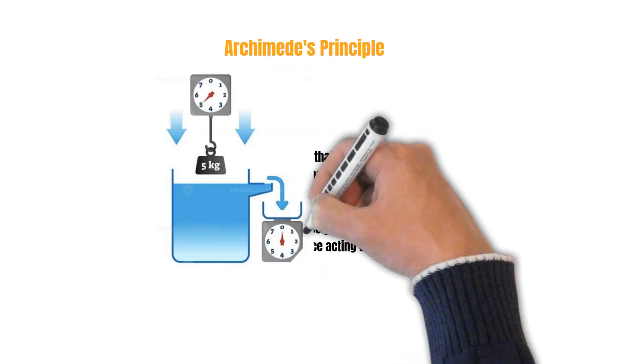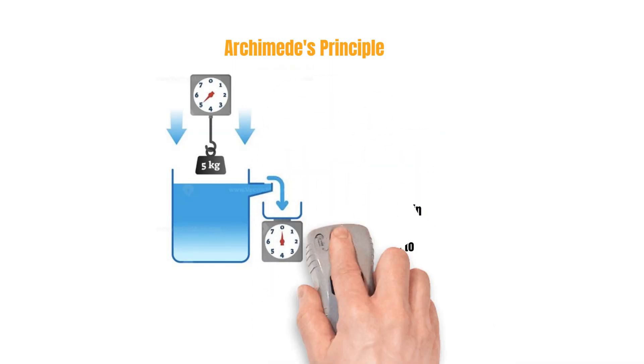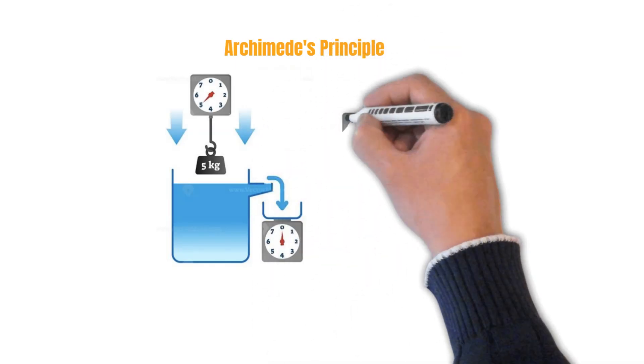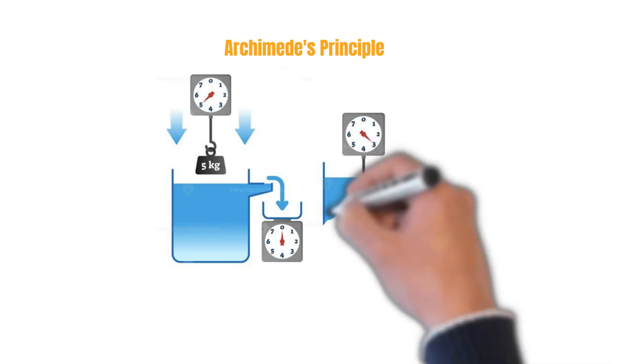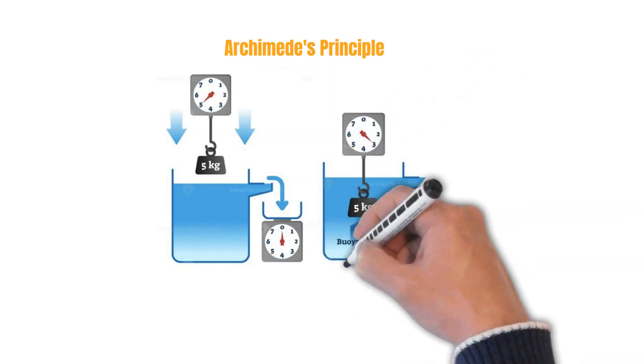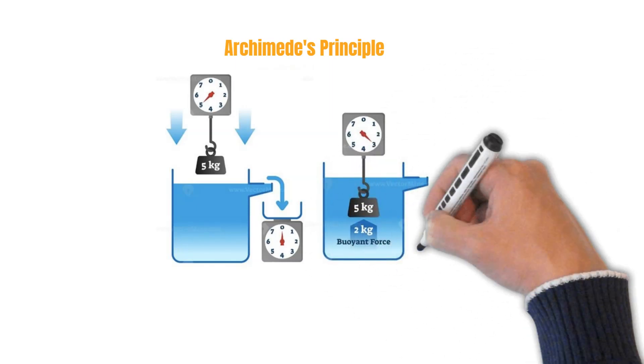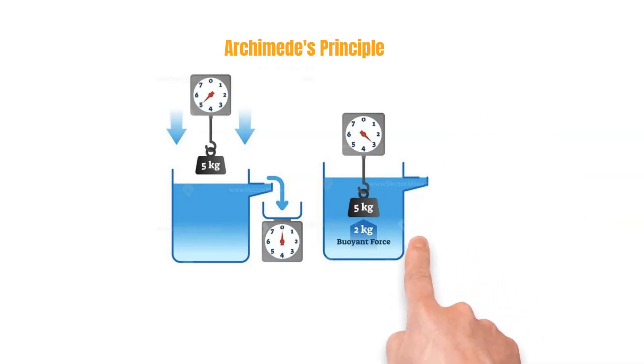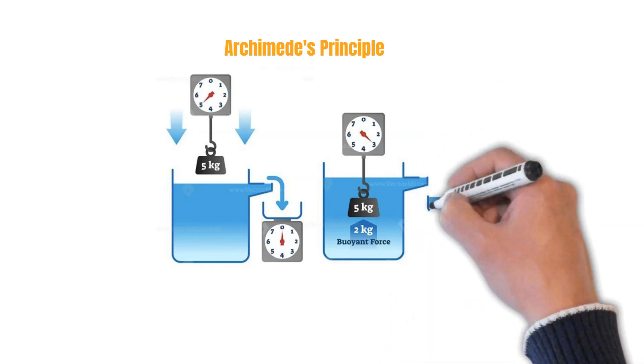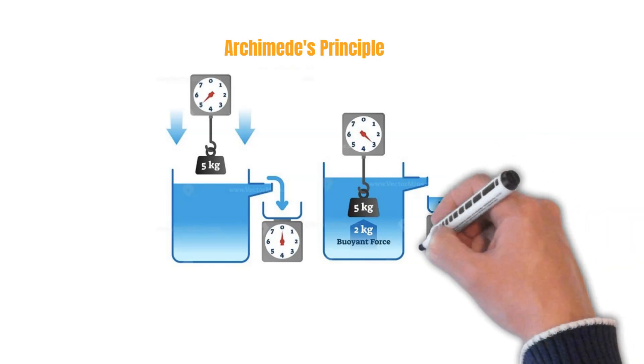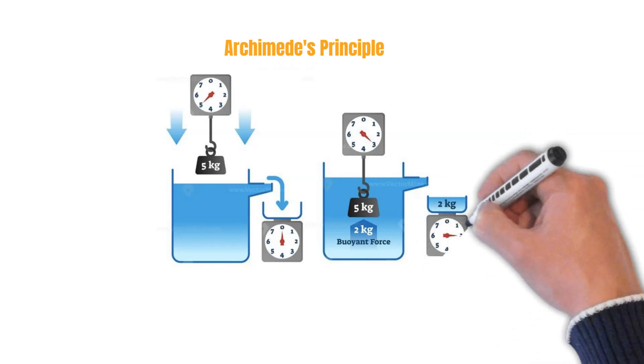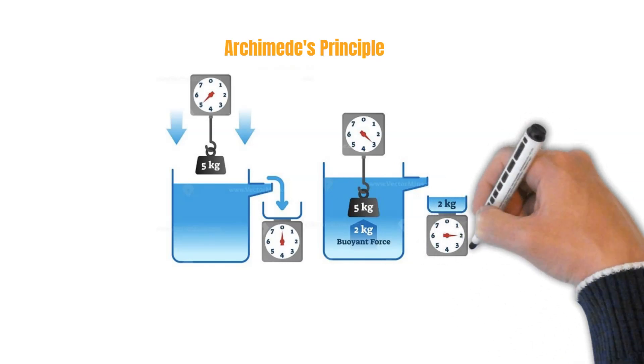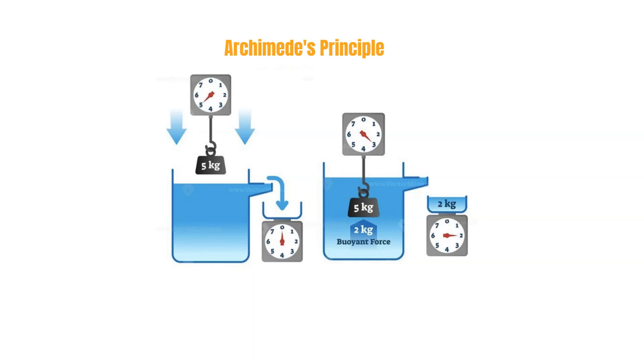When we immerse the weight, there is an upward force acting on it. We collect the displaced water in the same container and weigh that water - 2kg. Then we know that the upward force is 2kg. So it is very simple.